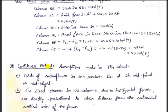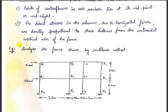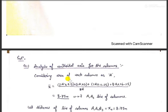The next method is the cantilever method, which also has certain assumptions. First, the point of contraflexure in each member lies at the midpoint. Second, the direct stresses in the columns due to horizontal forces are directly proportional to their distance from the centroidal vertical axis of the frame. This means the axial stresses acting in the columns are in proportion to the distance of that particular column with respect to the centroidal axis.